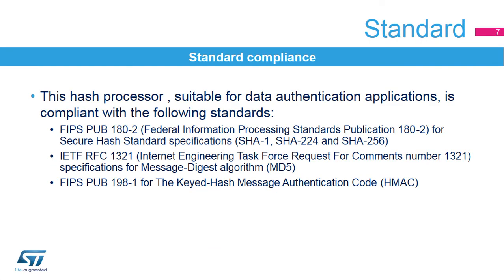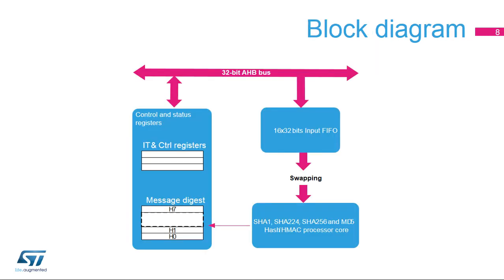The hash processor complies with the international standards for Secure Hash Algorithms (SHA), Message Digest algorithms (MD5), and for Message Authentication Code (MAC). This simplified block diagram of the hash processor shows the basic data flow and control modules. The hash processor processes 512-bit data blocks and generates digests of up to 256 bits depending on the algorithm. Input data may be swapped before entering the core unit, where they are processed to generate a simple hash or a message authentication code.